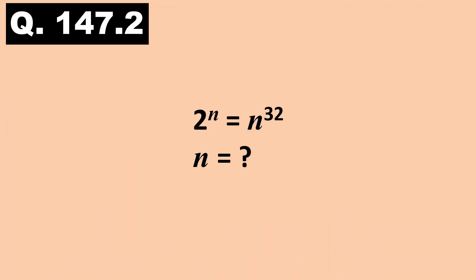Here is the second question, question number 147.2. This is an exponential equation with one variable. 2 power n is equal to n power 32. Find the value of n. Repeat, find n such that 2 power n is equal to n power 32. Timer starts now.